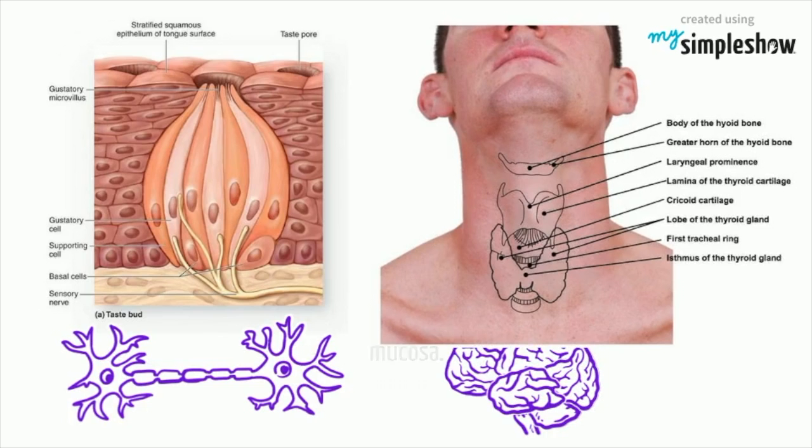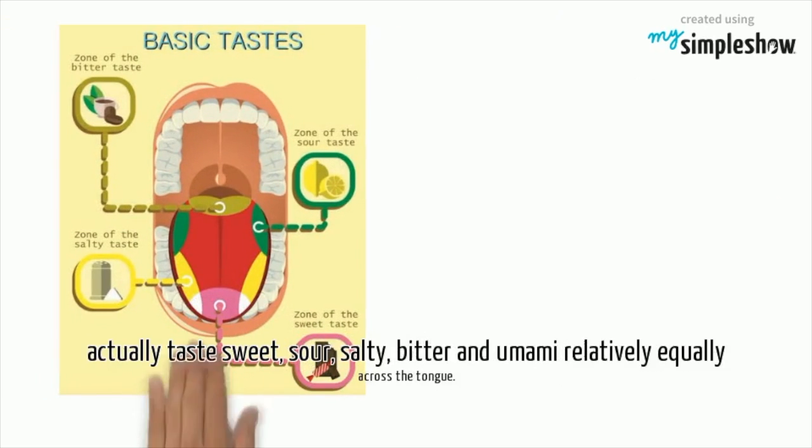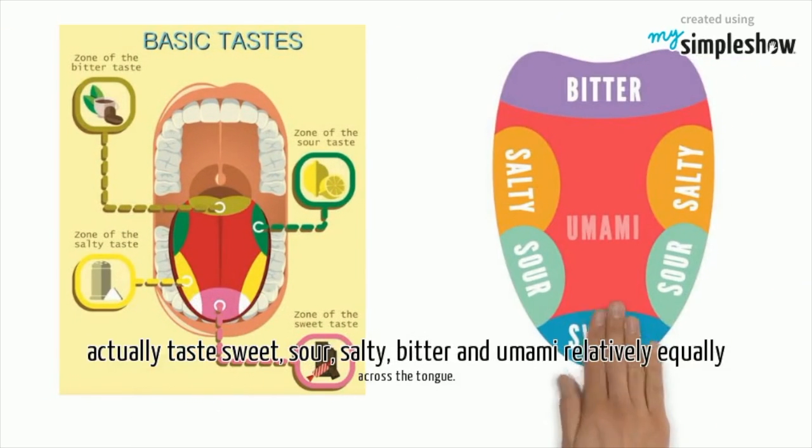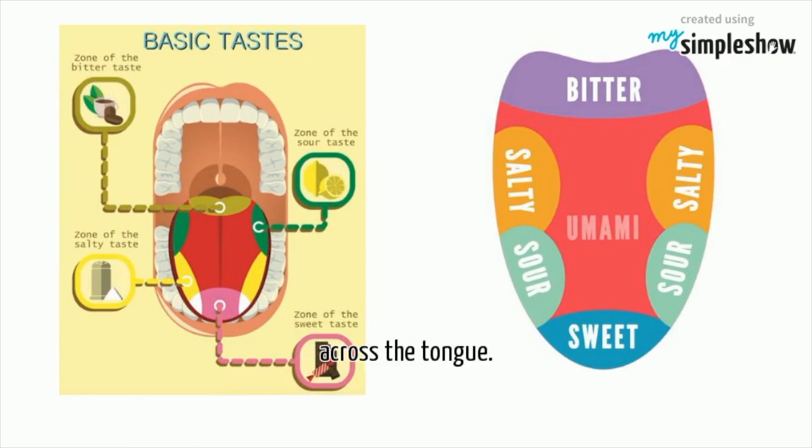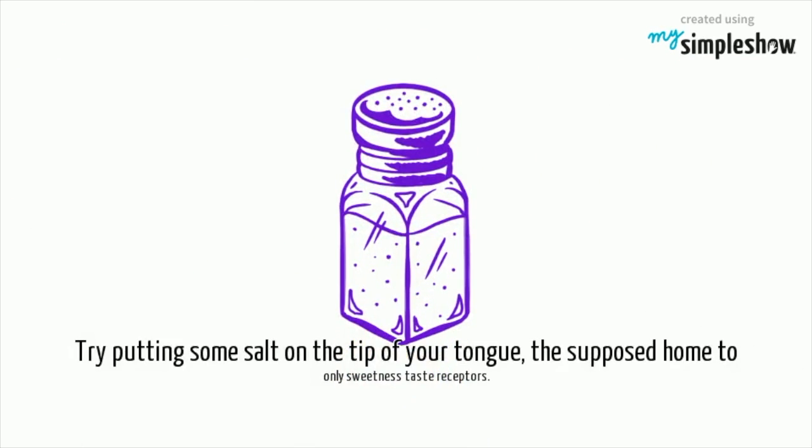Now, despite those tongue maps you've seen like this one, you can actually taste sweet, sour, salty, bitter, and umami relatively equally across the tongue. Don't believe it? Okay, try putting some salt on the tip of your tongue, the supposed home to only sweetness taste receptors.